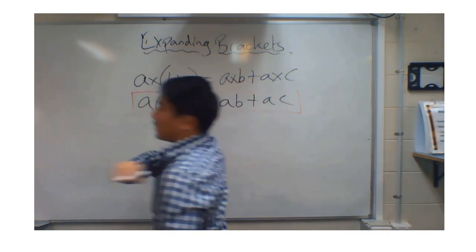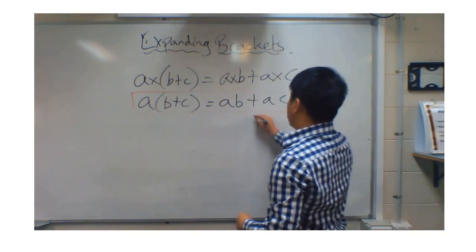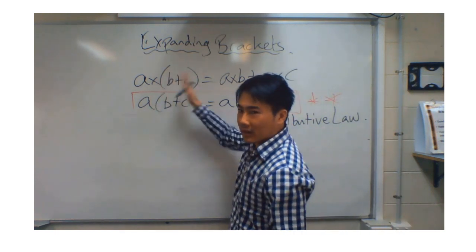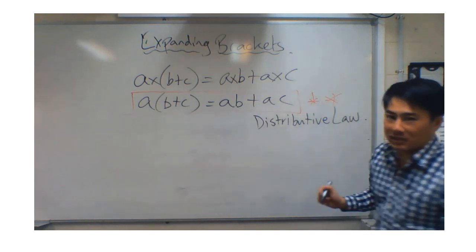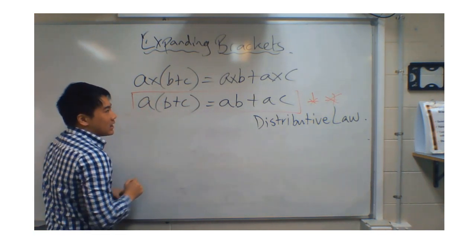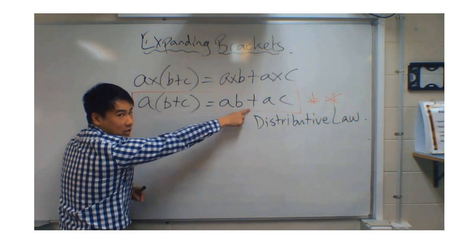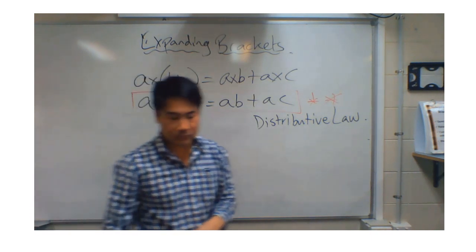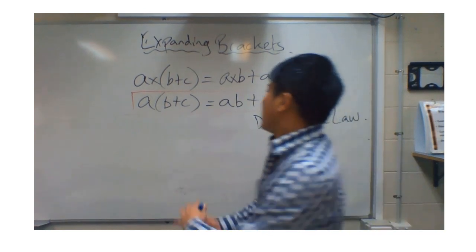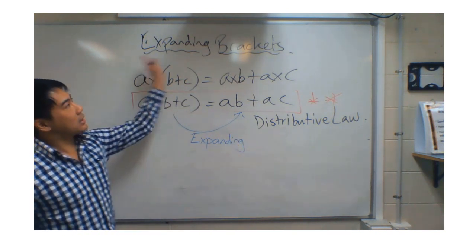This is the formula you need to know. Highlight it and put two stars next to it. There's a funky name for this formula — it's called the distributive law. The distributive law tells us A bracket (B plus C) equals AB plus AC. In other words, whatever is outside the bracket is multiplied by the first term inside, then you add whatever is outside multiplied by the second term. This is the key to expanding.